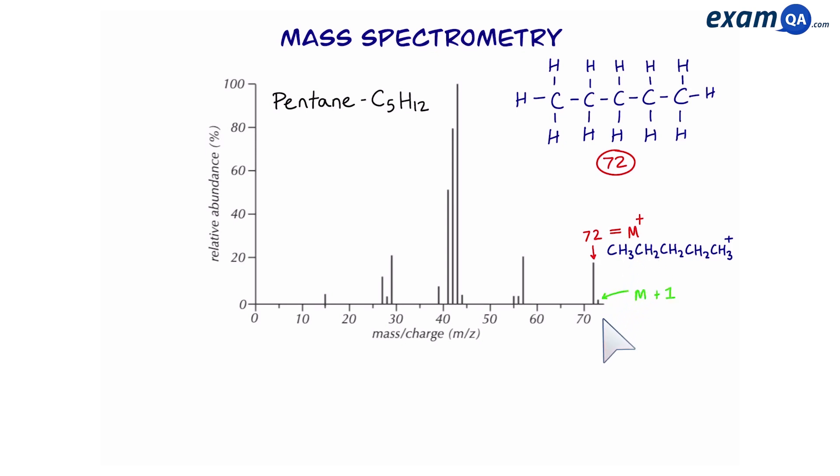Sometimes you might see a peak that is 1 above the M+, also known as the M plus 1 peak. You can ignore this, and the reason it's there is because there's a small percentage of carbon-13 present in the sample.